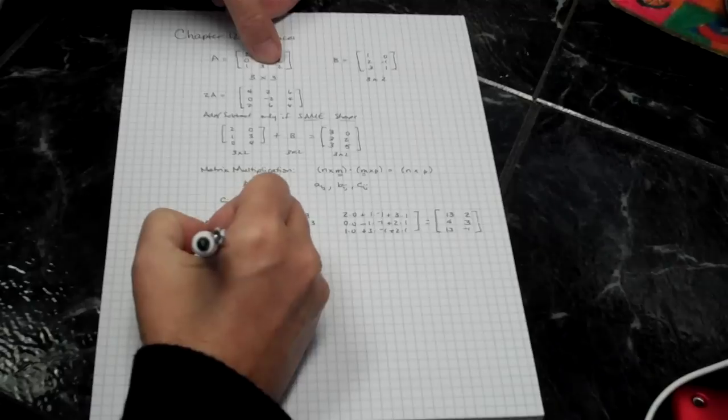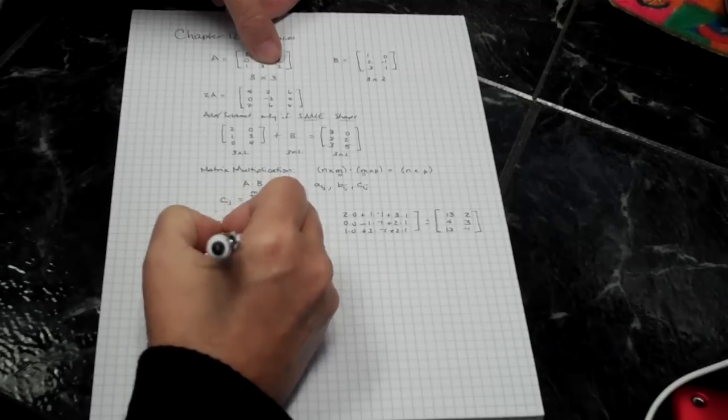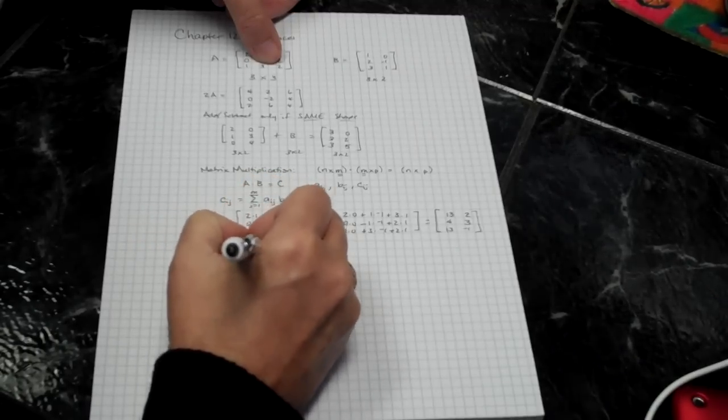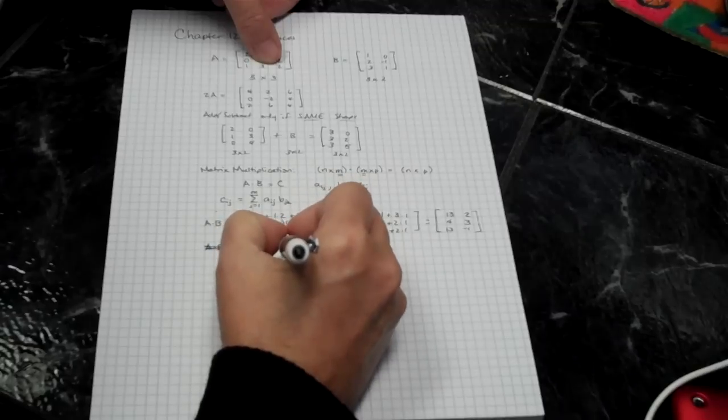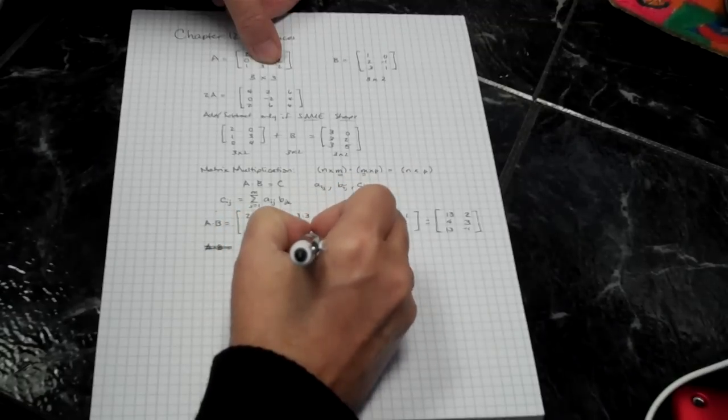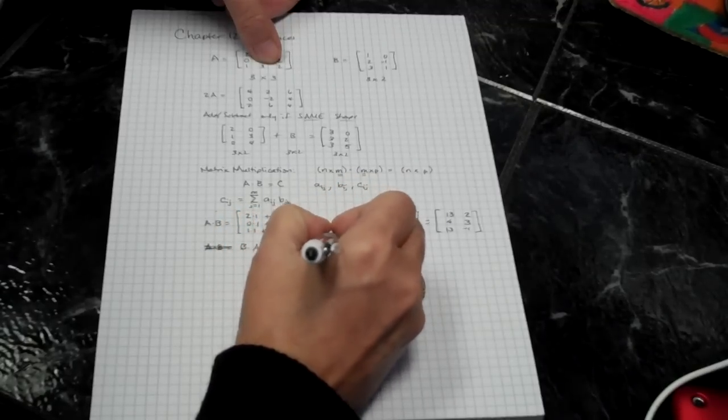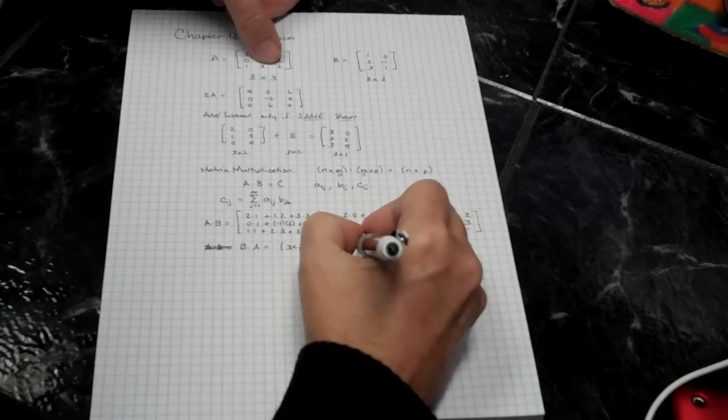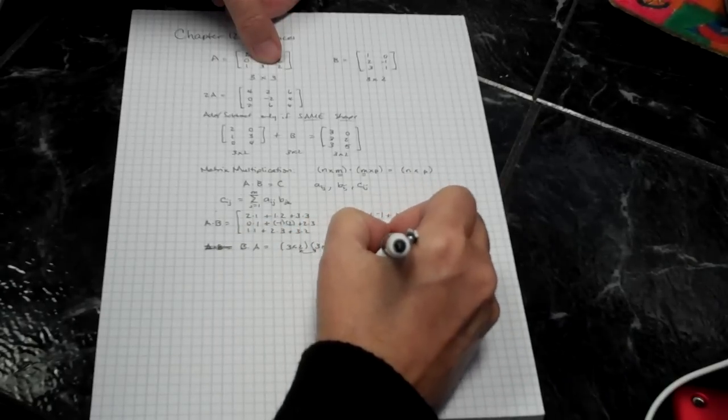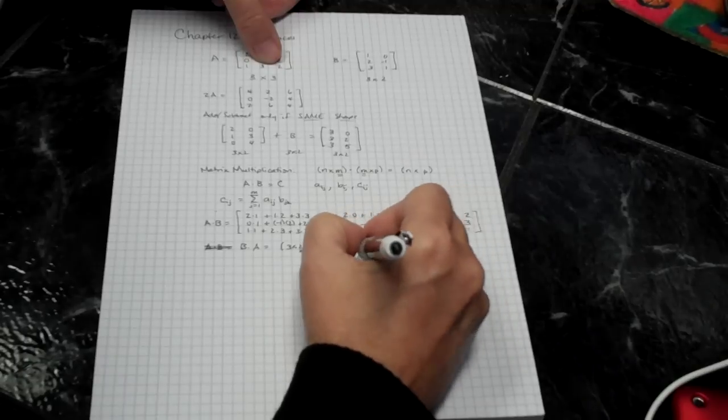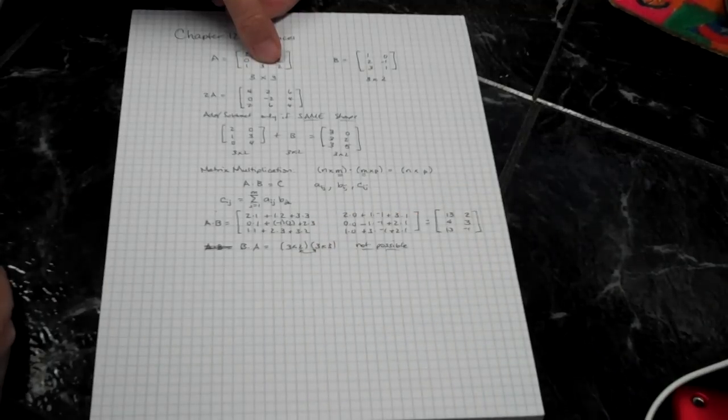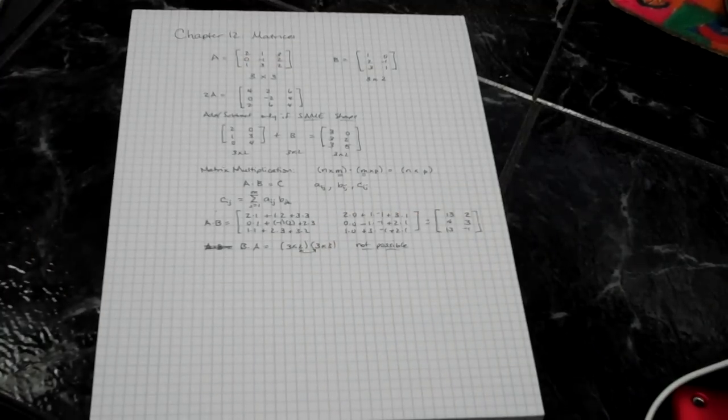What if I wanted to do B times A? Well, B is 3 by 2, A is 3 by 3. Those two don't match, so this is not possible. And it's quite reasonable that that can happen.